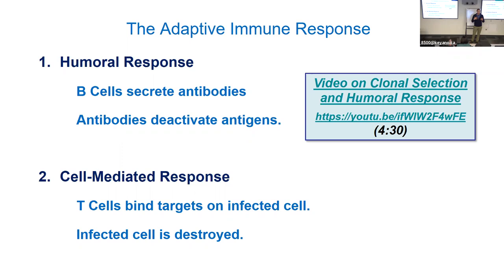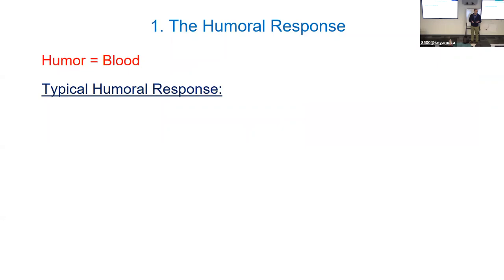So humoral immunity — humoral means blood. It really just means secreting antibodies in the blood and lymph. If you remember the video, we had those B cells secreting antibodies, and those antibodies were binding to the M protein on the streptococcus.